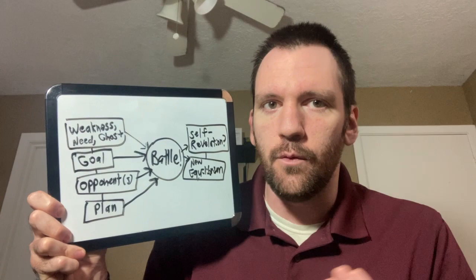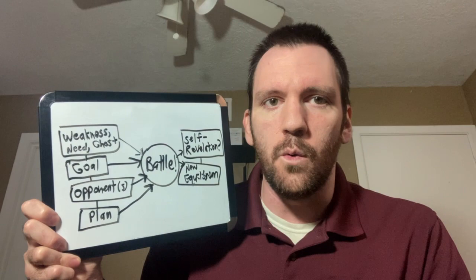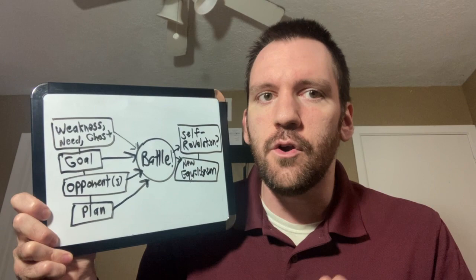Instead of an act structure, we get what do the characters want? Their goal. Who's to get in the way? Their opponents. And what is their plan to get it? The plan, usually based on a weakness, need, or ghost from their backstory. Instead of Act 2, we get the battle. The plans clash with each other, creating the narrative drive. Eventually, we get a new equilibrium, and if the character has an arc, they usually have a self-revelation.